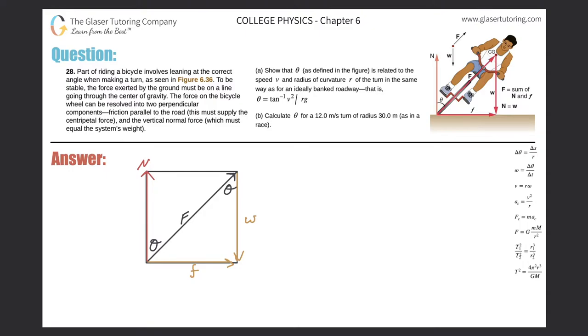Number 28. Part of riding a bicycle involves leaning at the correct angle when making a turn, as seen in figure 6.36. To be stable, the force exerted by the ground must be on a line going through the center of gravity. The force on the bicycle wheel can be resolved into two perpendicular components: friction parallel to the road, which must supply the centripetal force, and the vertical normal force, which must equal the system's weight. Letter A: Show that theta as defined in the figure is related to the speed v and radius of curvature r for the turn in the same way as for an ideally banked roadway. That is this equation.